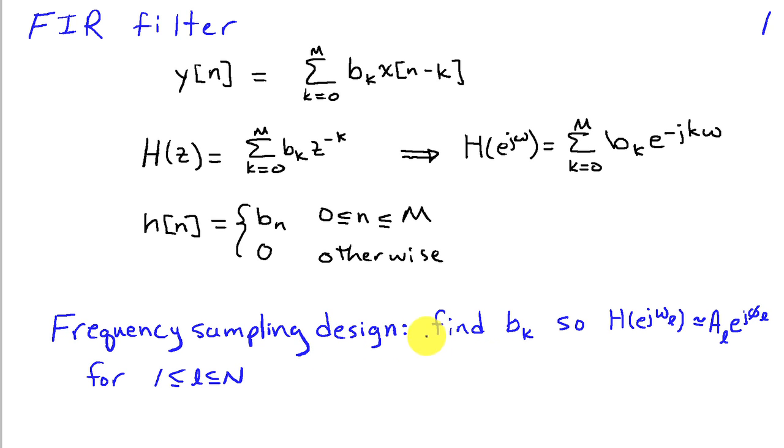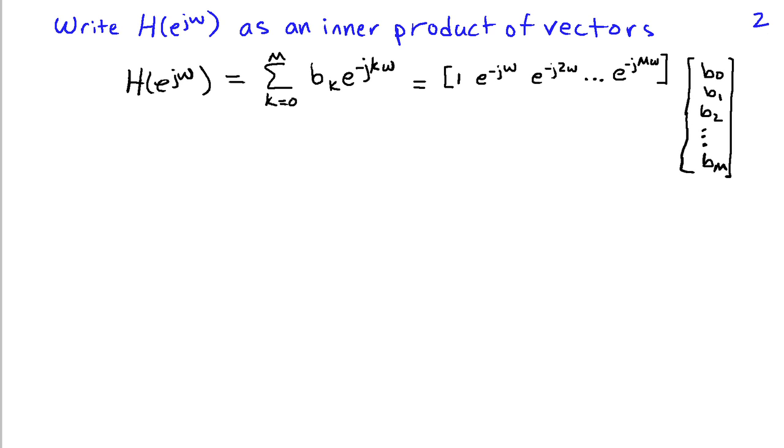The frequency sampling design approach chooses the coefficients b_k so that the frequency response approximates some desired response A_L e^(jφ_L) at capital N frequencies. We pick frequencies where we want to specify our response and set the response at those frequencies equal to some desired amplitude and phase. To see how this is done, it's most convenient to write the frequency response H(e^jω) as an inner product of two vectors, a sum of products of the b_k's times e^(-jkω).